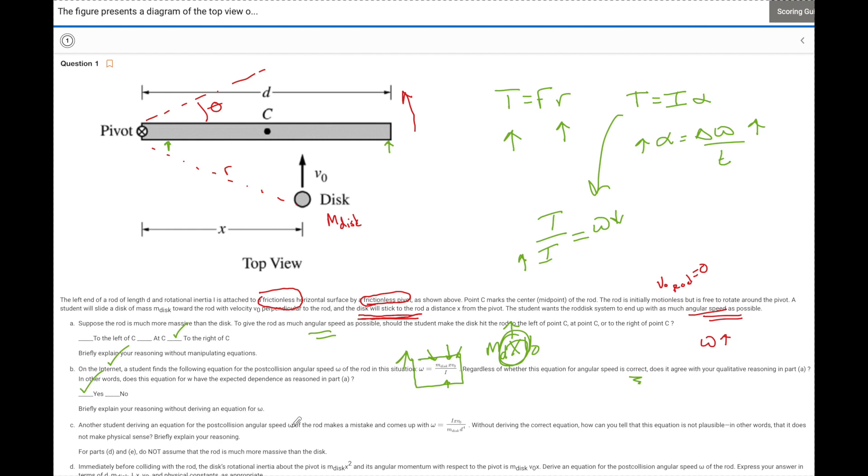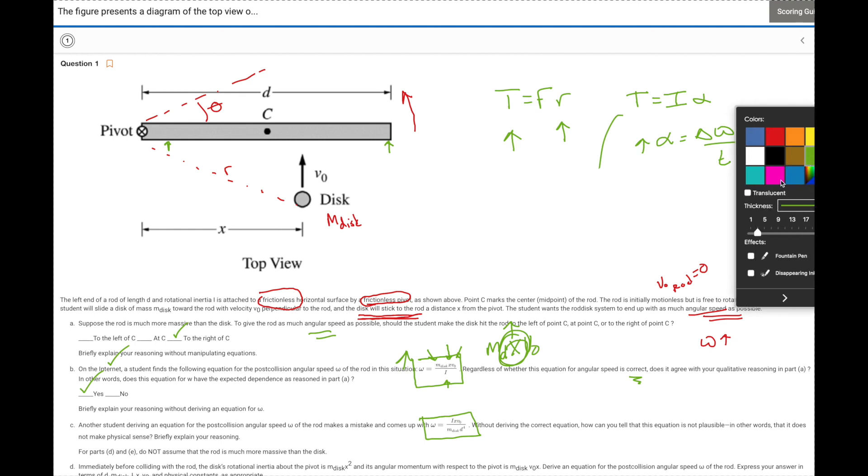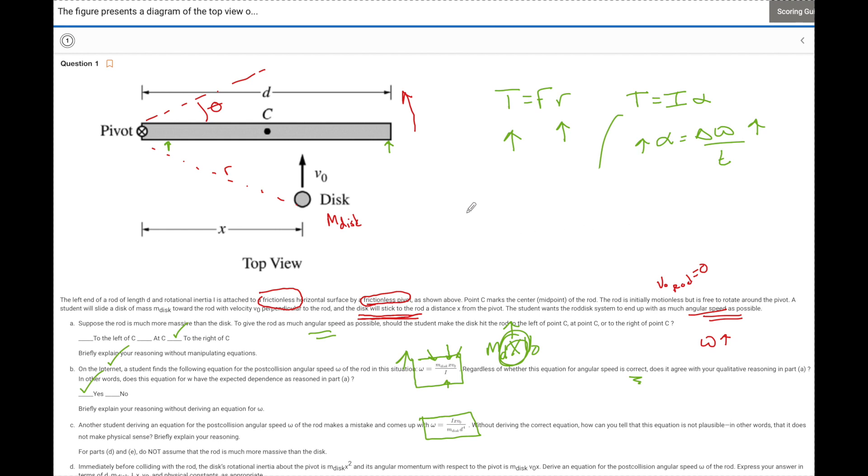Another student deriving equation for the post-collision of the angular speed W of the rod makes a mistake, oops, and comes up with this equation right here. And I'm just going to draw this equation a little bit bigger. I'll do it in a different color. Let's go pink. So this is what the student came up with. W equals I X V naught over M disc D to the fourth. Holy Toledo, Batman. So without deriving the correct equation and saying you're wrong because here's the right equation, how can you tell that this equation is not plausible? In other words, that it does not make physical sense and then explain.